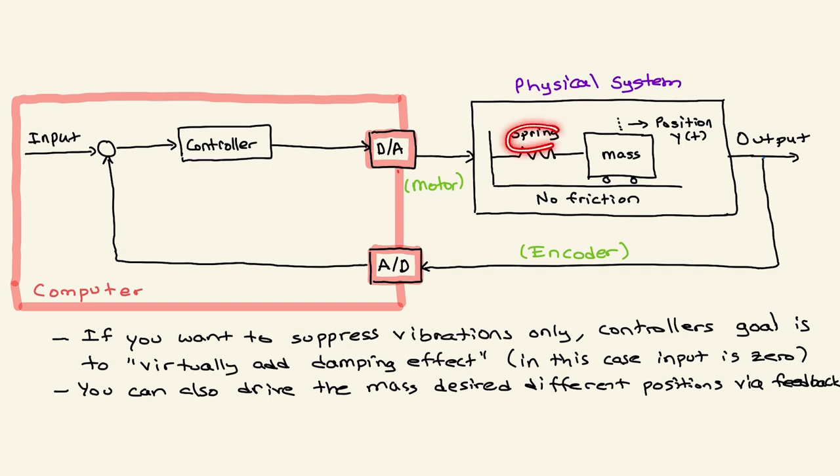While the actual physical system only has a spring, based on this feedback loop we kind of add here a virtual damper. Although it doesn't physically exist, we can make it exist through the software, such that once you have both spring and damper, then this oscillation will go to zero eventually after a transient period, for the case of suppressing vibrations.